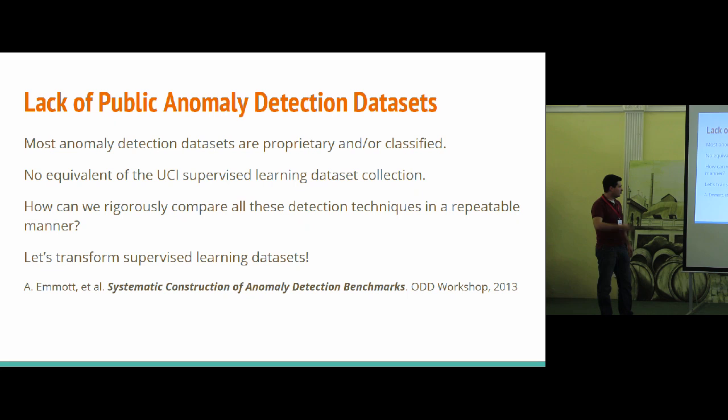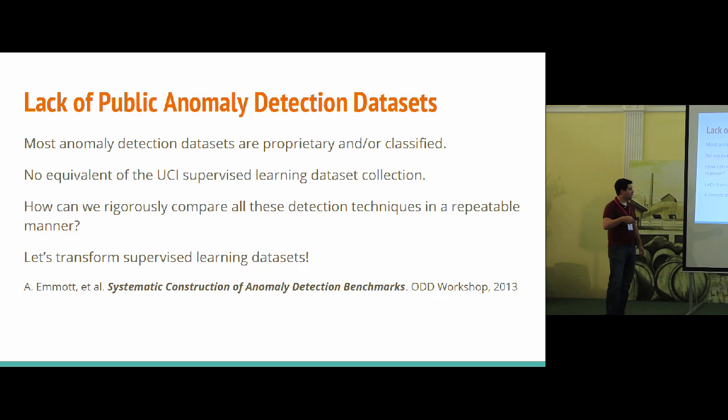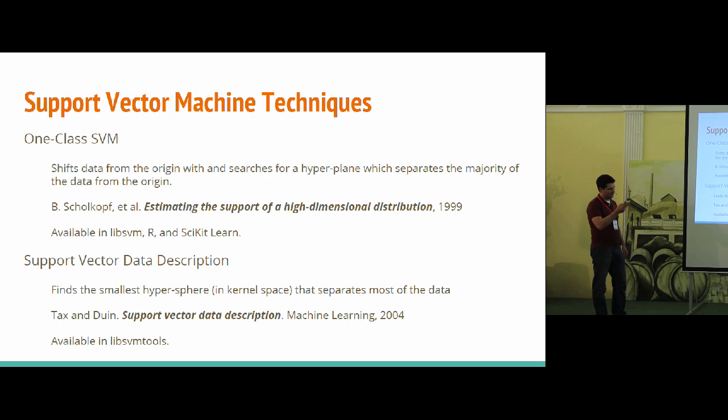That led to work of taking some of the really nice public datasets for supervised learning that UCI maintains and transforming them into something usable for anomaly detection. Before I get deeper into that, I wanted to do a super quick review of some anomaly detection algorithms.